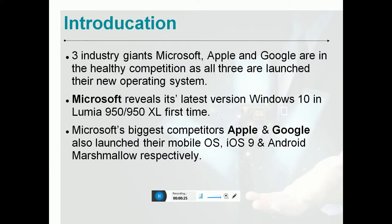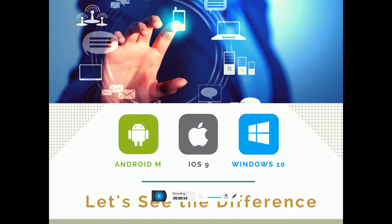The three industries — Microsoft, Apple, and Google — are in fierce competition as well as launching their new operating systems. Microsoft's latest version is Windows 10, first seen on the Lumia 950 and 950 XL. Microsoft's biggest competitors are Apple and Google, who also launched their mobile OSes in iOS 9 and Android Marshmallow respectively.